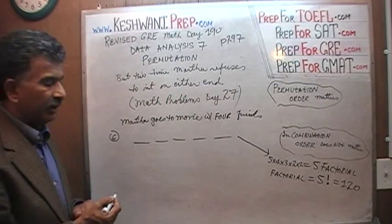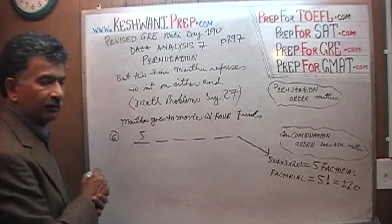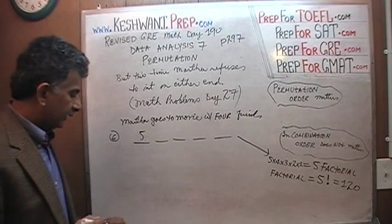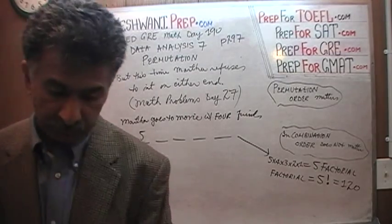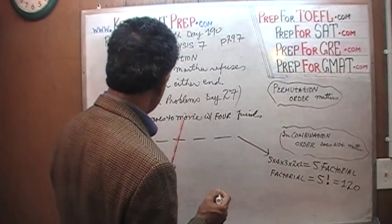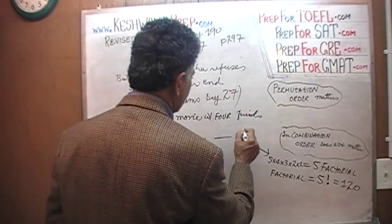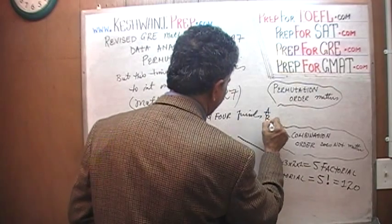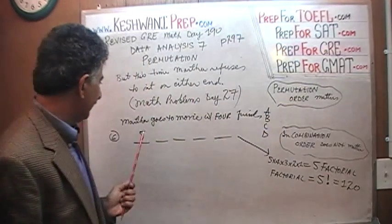We found out that the answer to question number 6 was 5 factorial. There are 5 factorial ways. There are 5 ways that they can fill the first seat because there are 5 people. Let's call her friends A, B, C, D. So we have 4 friends A, B, C, D and we have Martha.